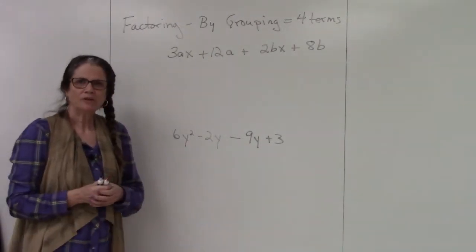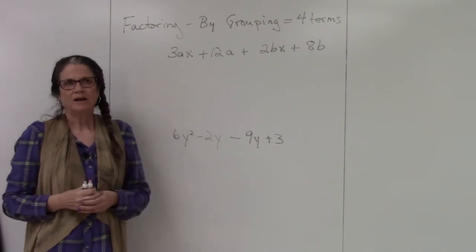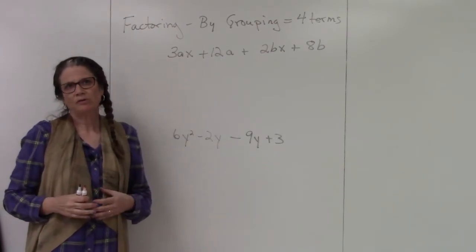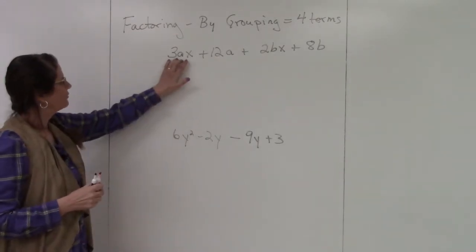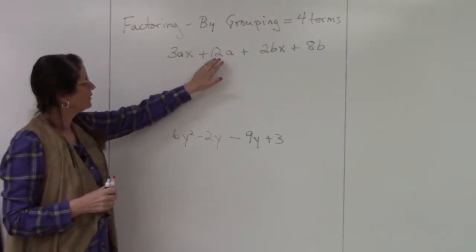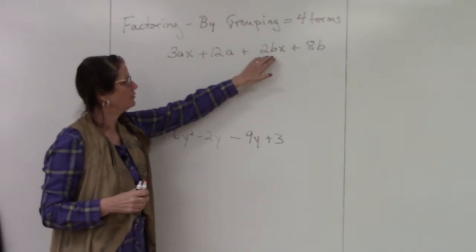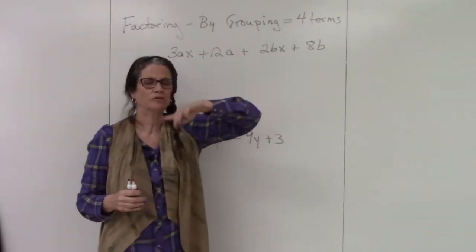The next type of factoring is called factoring by grouping. How you know it's factoring by grouping is you have four terms. So four terms means you have one term, plus or minus another term, plus or minus another term, plus or minus another term.